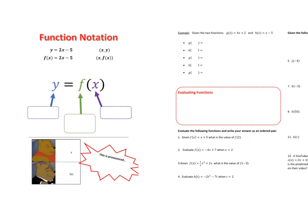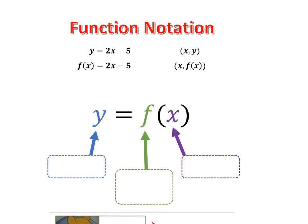We're going to use a new notation when talking about functions called function notation. If you look at the top here, this is a function written how you're probably used to seeing it, where there are x's and y's creating coordinates. With function notation, we now have this line. The only thing that's different is that instead of writing y's, we write the symbol f of x for both the function and the ordered pair.